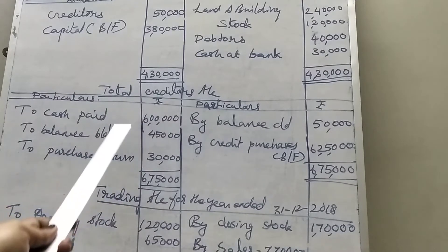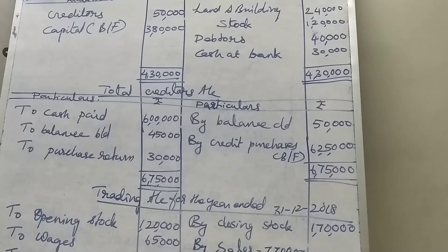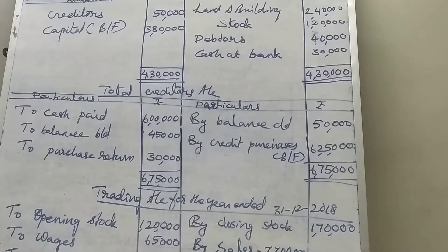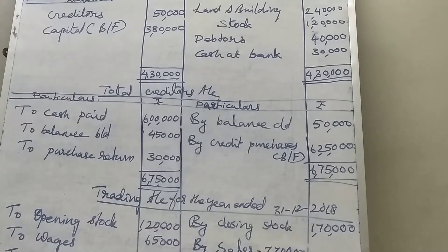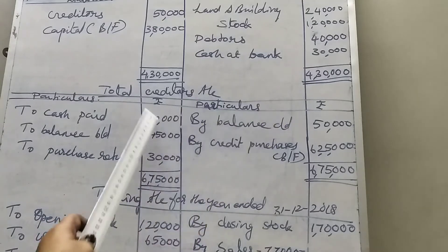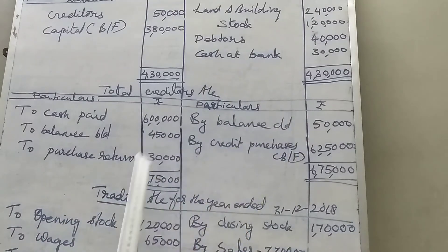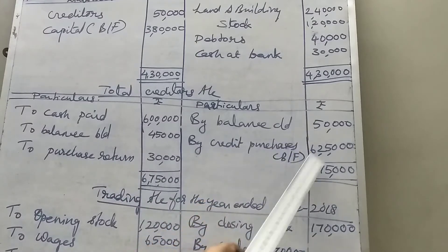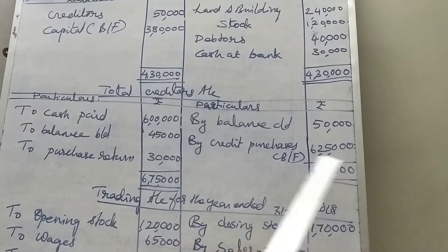The creditors account closing balance of 45,000 and opening balance of 50,000 are both given in the question. Purchase return is also given in the additional information — purchase returns during the year were 30,000. By utilizing these items — 6 lakhs, 75,000 minus 50,000 — we find out credit purchases: 6,25,000. Now we have credit purchases and opening capital.